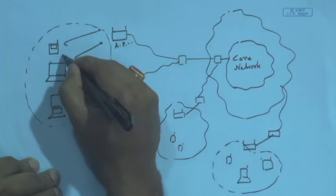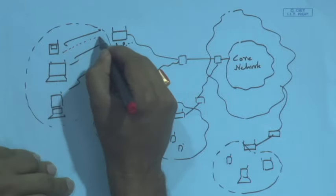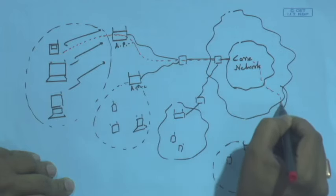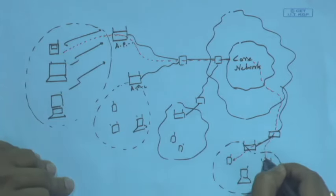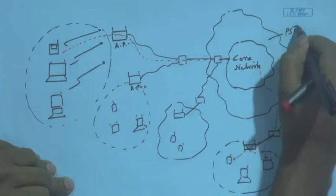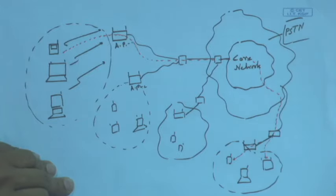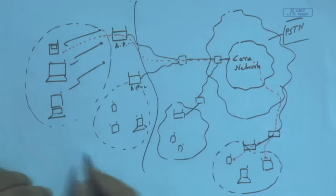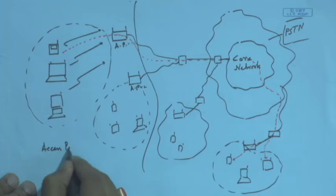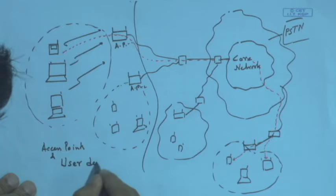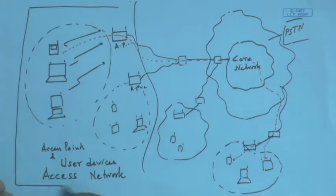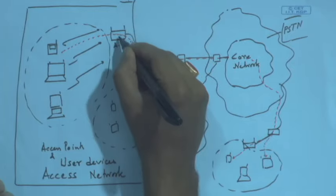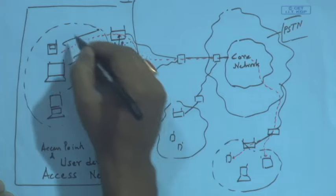On the other side of the core network, similarly, one could find another access network. Data signals typically travel from one device through an access point into the core network, via another access network, to another device or central server. This part of the network — consisting of access points and user devices — is known as the access network.